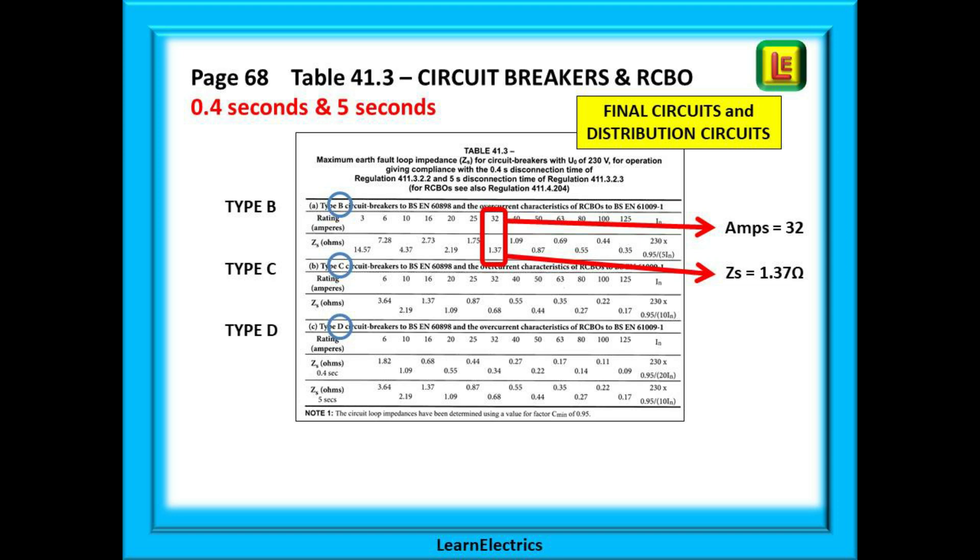Read the question. It will tell you the type. They all have different ZS values. We've highlighted in red a type B breaker of 32 amps rating. And vertically below 32 is the ZS value 1.37 ohms.